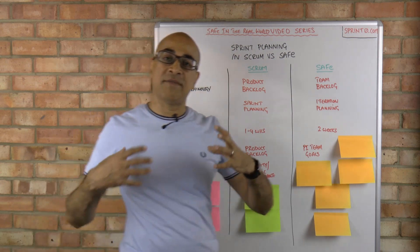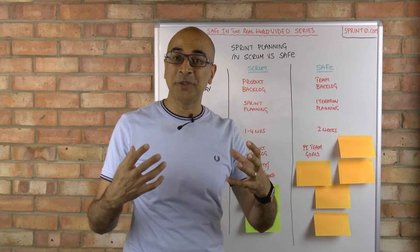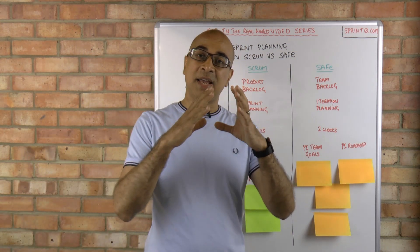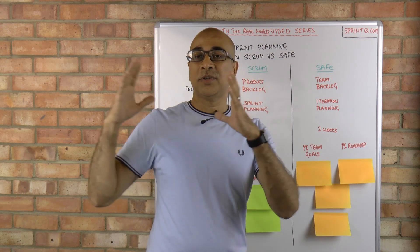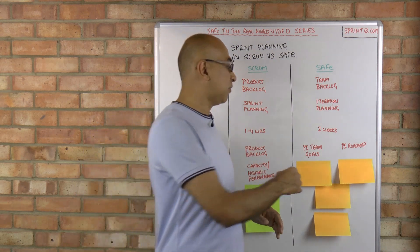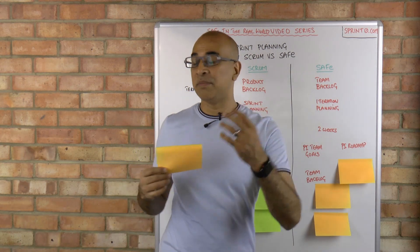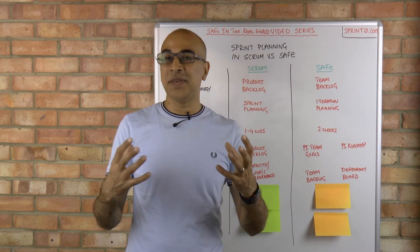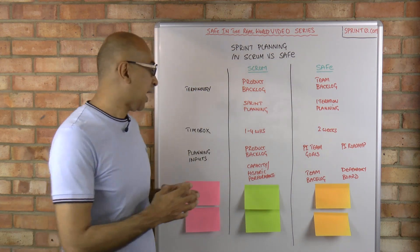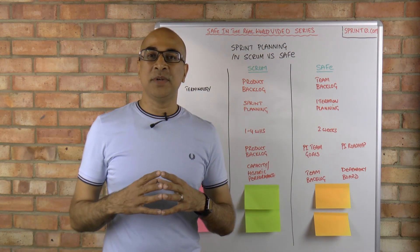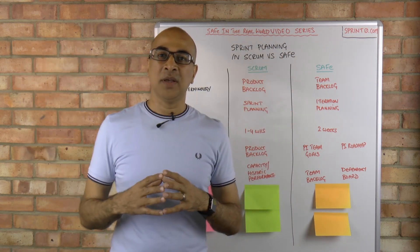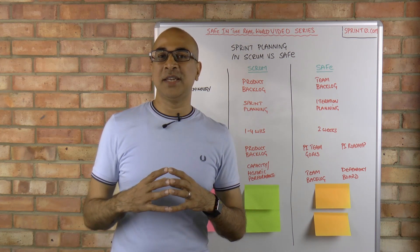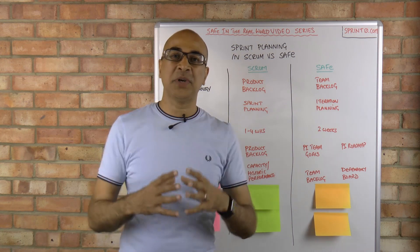In SAFe, the inputs are different. If you remember, we may have our PI planning event which will have produced PI team goals — that's an input. You have your roadmap, which is your emergent plan spanning four to six sprints depending on your program increment cadence. You have your team backlog, and finally your dependency board. When a team is working in Scrum they don't need to worry that much about what everybody else is doing, whereas in iteration planning within SAFe there needs to be much more focus on what the other teams are doing.